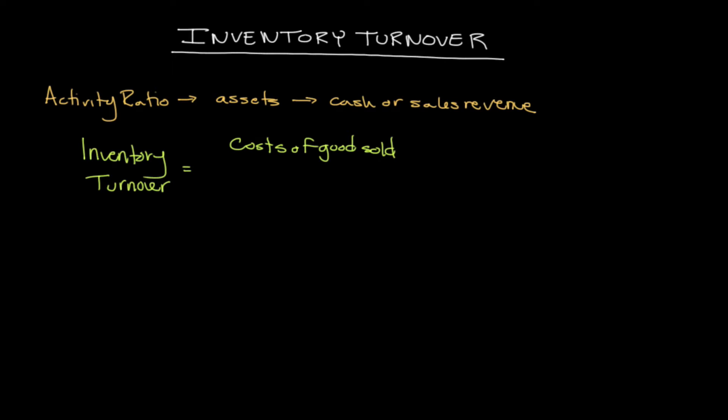Cost of goods sold appears on the income statement right below revenues, because it includes all the costs associated with generating those sales revenues. We divide this figure by average inventory. Inventory is found on the balance sheet as an asset, but the balance sheet is a snapshot at a specific point in time, so we can't get average inventory from a single date. You need beginning and ending inventory figures.